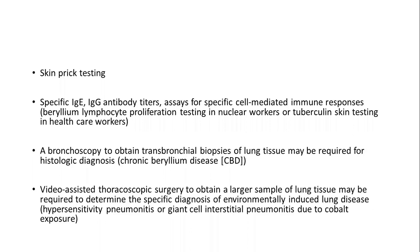Other tests include skin prick testing or looking for specific immunoglobulin E or immunoglobulin G antibody titers. In some cases, you may order bronchoscopy to obtain a transbronchial biopsy of the lung tissue for histological diagnosis — for example, in chronic beryllium disease, you may find a granuloma. In some cases, video-assisted thoracoscopic surgery may be needed to obtain a larger lung tissue sample for diagnosis, such as in hypersensitivity pneumonitis or giant cell interstitial pneumonitis.